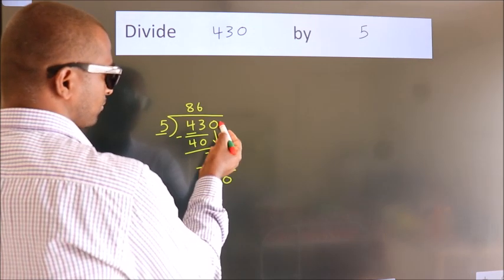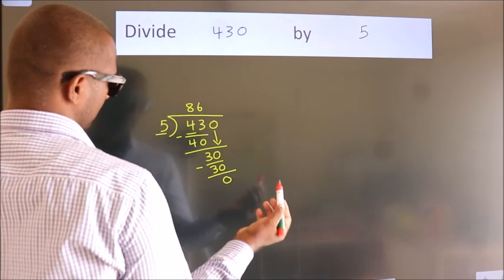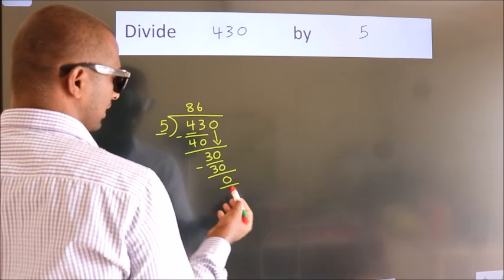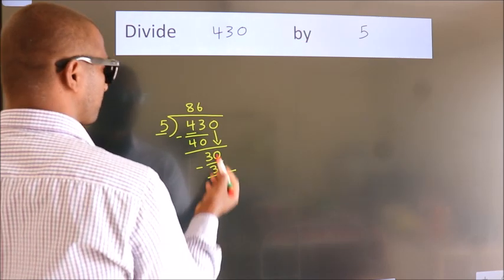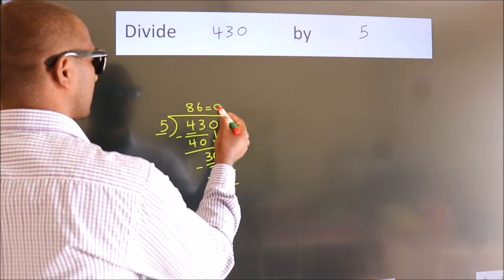After this, no more numbers to bring down. And we got remainder 0. So this is our quotient.